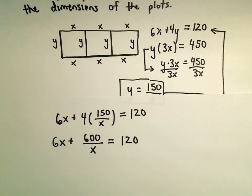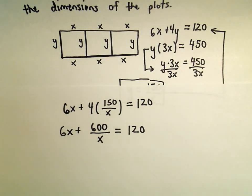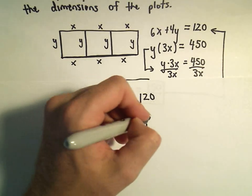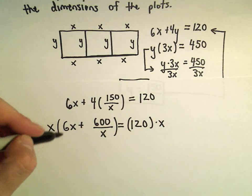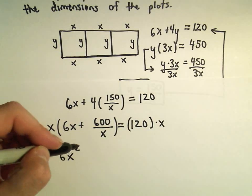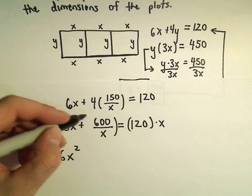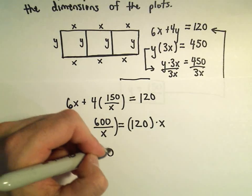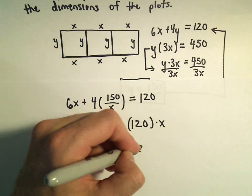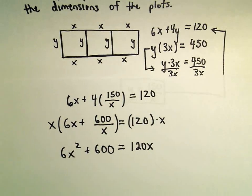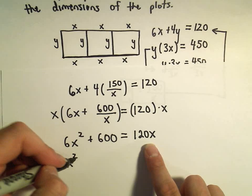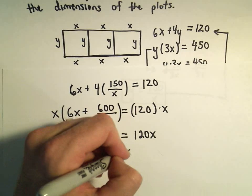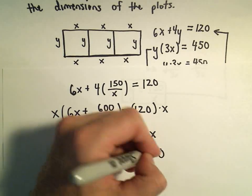To turn this into a quadratic, I'm going to multiply both sides of the equation by x. So we'll have 6x squared. When we distribute x times 600 over x, the x's will cancel and we'll have a positive 600. Then we have 120x on the right side. I'm simply going to subtract the 120x so that we have one side equal to 0. Now we have a quadratic that hopefully we can solve without too much trouble.